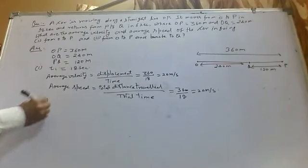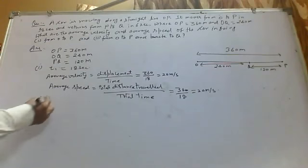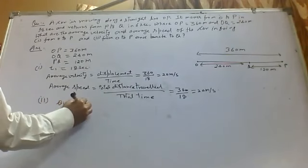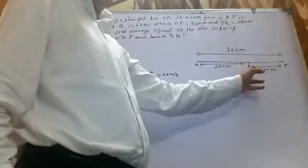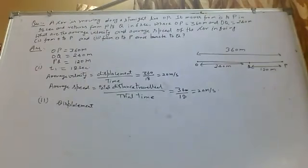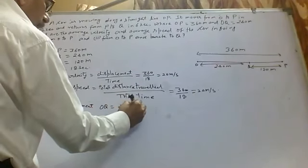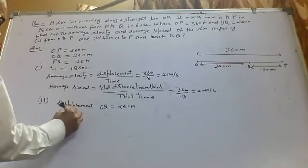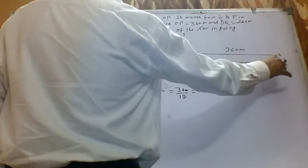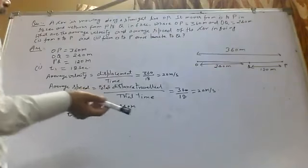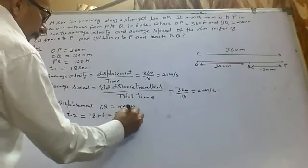Now for the second case: average speed and average velocity from O to P and back to Q. The body starts from O, goes to P, then comes back to Q. The displacement is OQ only, which is 240 meters. Total time T2 equals time from O to P, which is 18 seconds, plus time from P to Q, which is 6 seconds, so total time is 18 plus 6 equals 24 seconds.